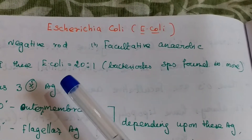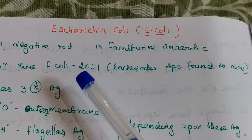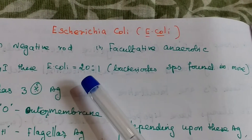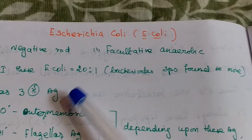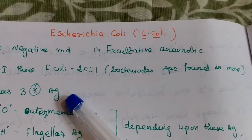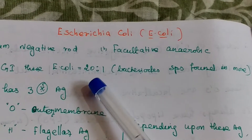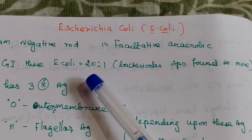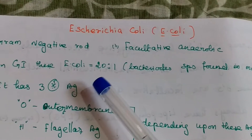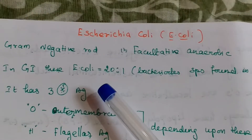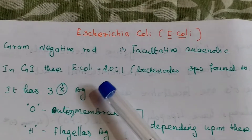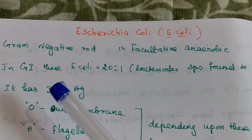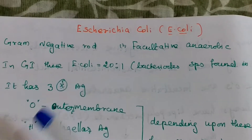E. coli is found in maximum number in the gastrointestinal tract compared to other bacteria, including Bacteroides species found in greater numbers.